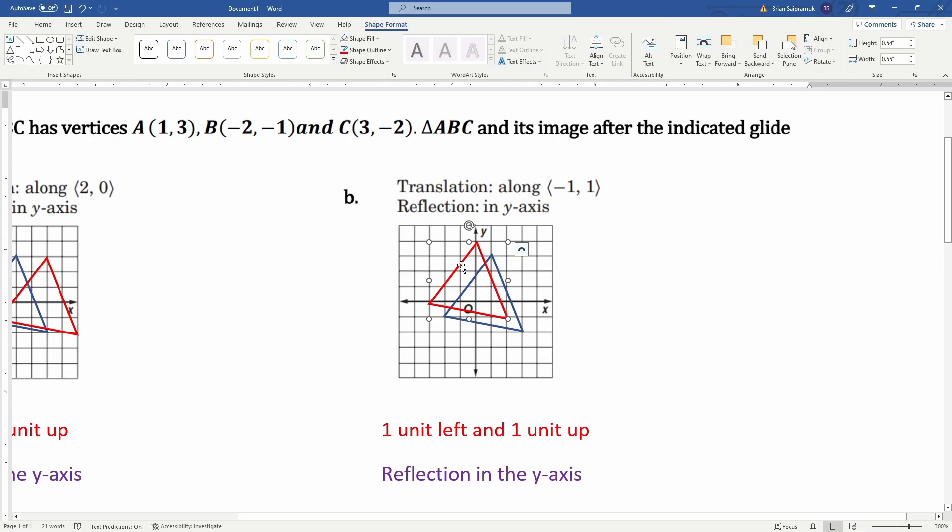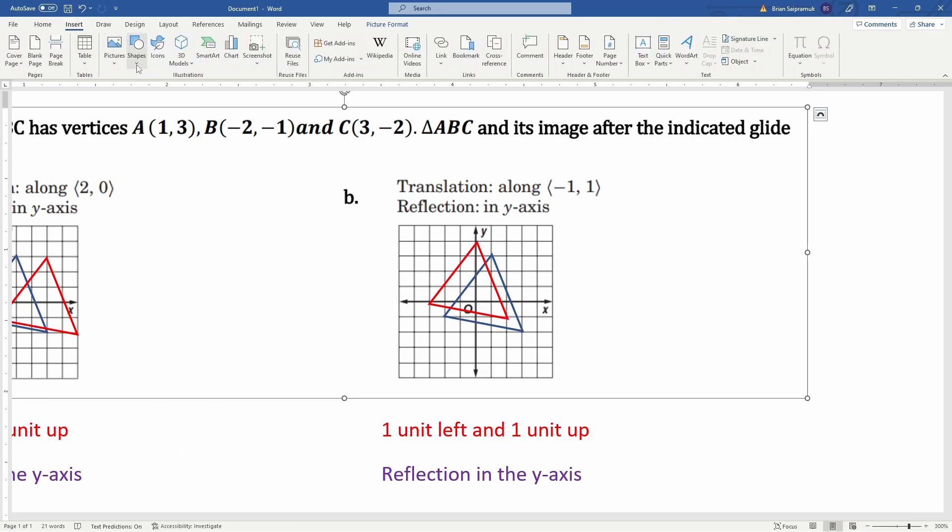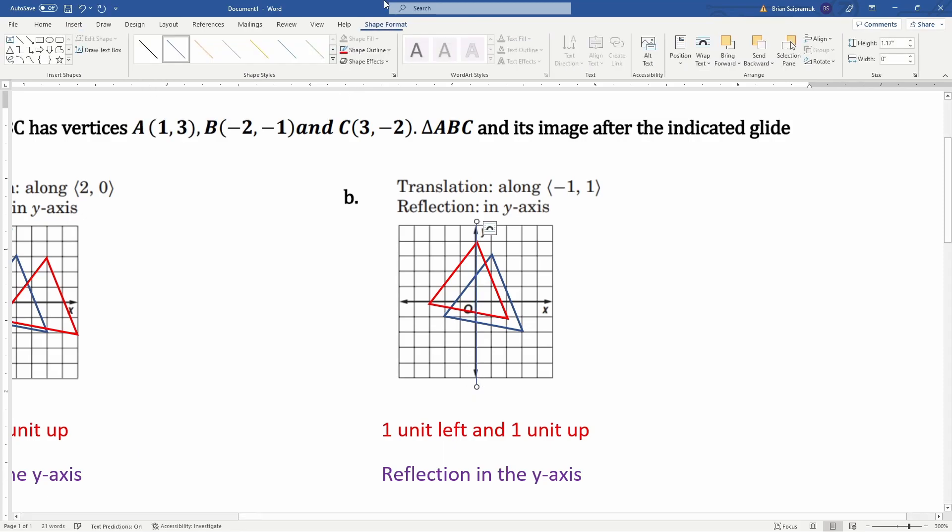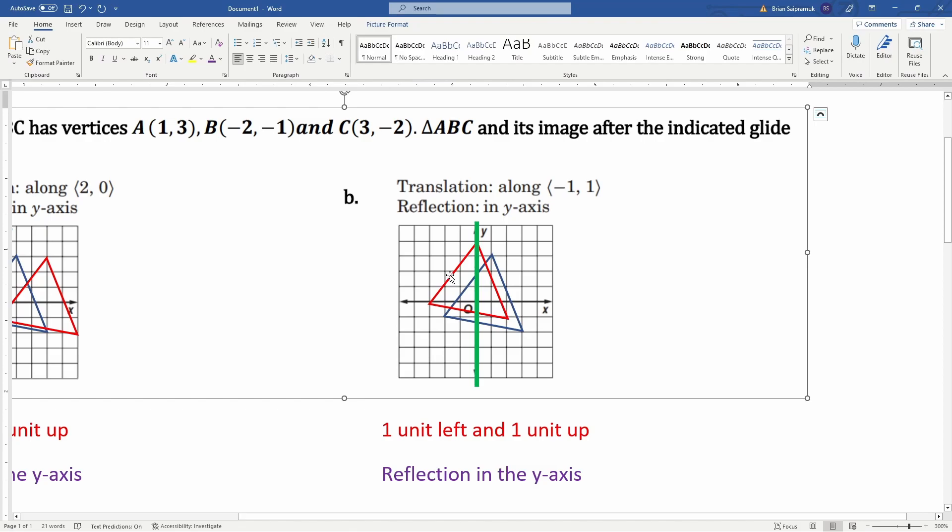Now I'm going to reflect it, so let me draw my line of reflection. That is that green line, very large, that tells us we're going to reflect across that.